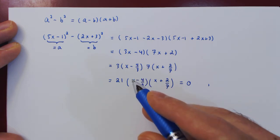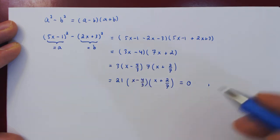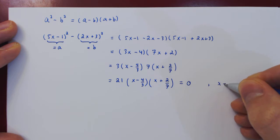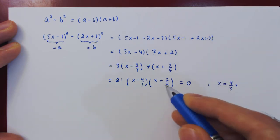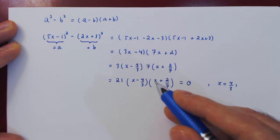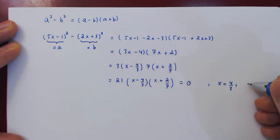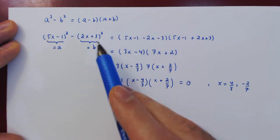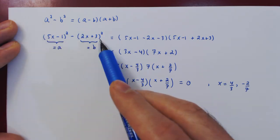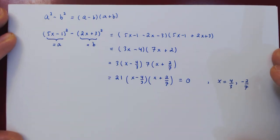If this factor is 0, in which case x is 4 over 3. Or the second factor is 0, in which case x is negative 2 over 7. And this is how you can take advantage of the idea of difference of squares to factor efficiently polynomials in this form. And that's it.